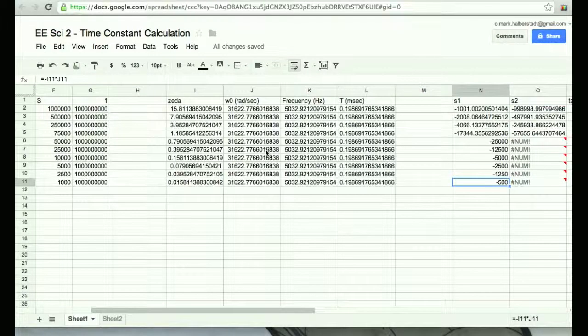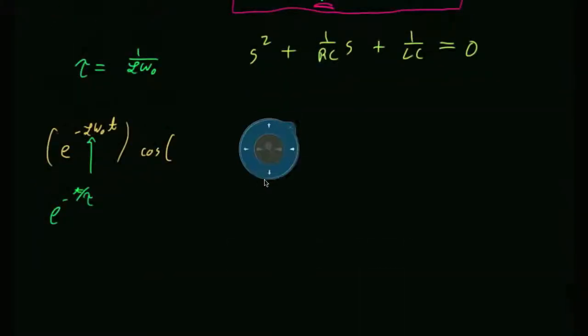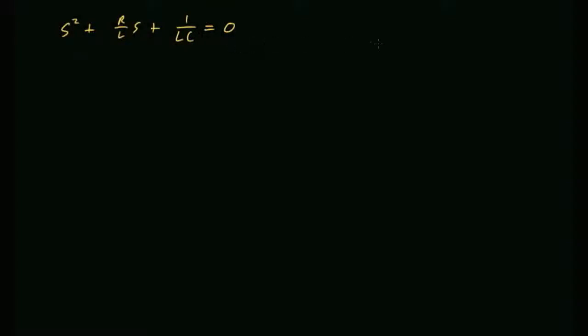The class agrees to work a hand example without PowerPoint using the original circuit. The characteristic equation is s² + (R/L)s + 1/LC = 0. Let C = 0.5 μF, L = 2 mH, and R = 2 Ω.